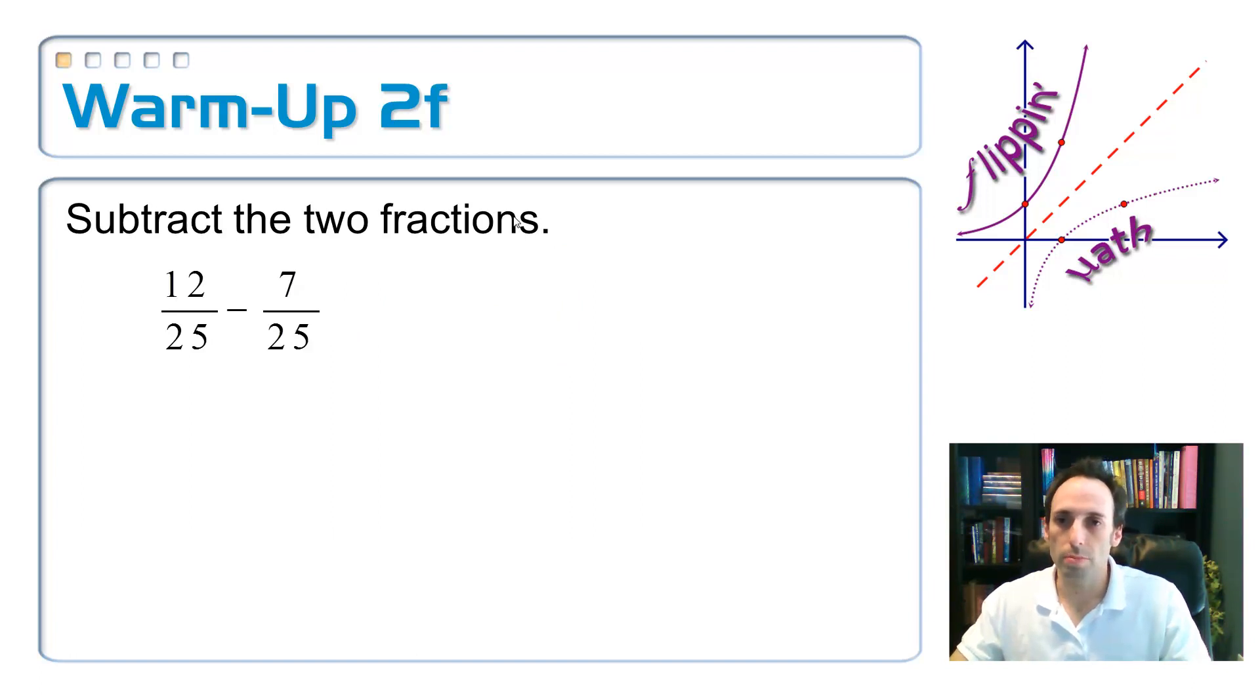So here's a subtraction problem. On these two fractions, they have the same denominator. If they have the same denominator, it's going to stay 25. And now subtract the tops. I got 12 minus seven.